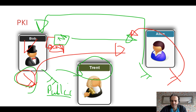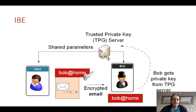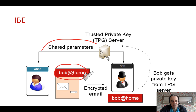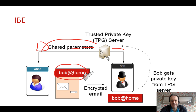Now let's look at Identity-Based Encryption. With IBE, we use some form of identity — for example, Bob's email address. We create a trust domain with a Trusted Private Key Generator (TPG), and there are shared parameters between Bob and Alice, which could be short-term or long-term. Alice doesn't need to know Bob's encryption key directly; instead, she uses something about his identity to create a unique encryption key.